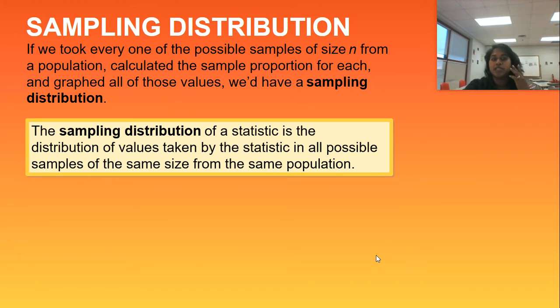So the sampling distribution of a statistic is if you take the distribution value of all of the different populations. Again, a sampling distribution is not a single sample's information. It's, you know, you're talking about something about a population. So you're going to take all of your different samples.